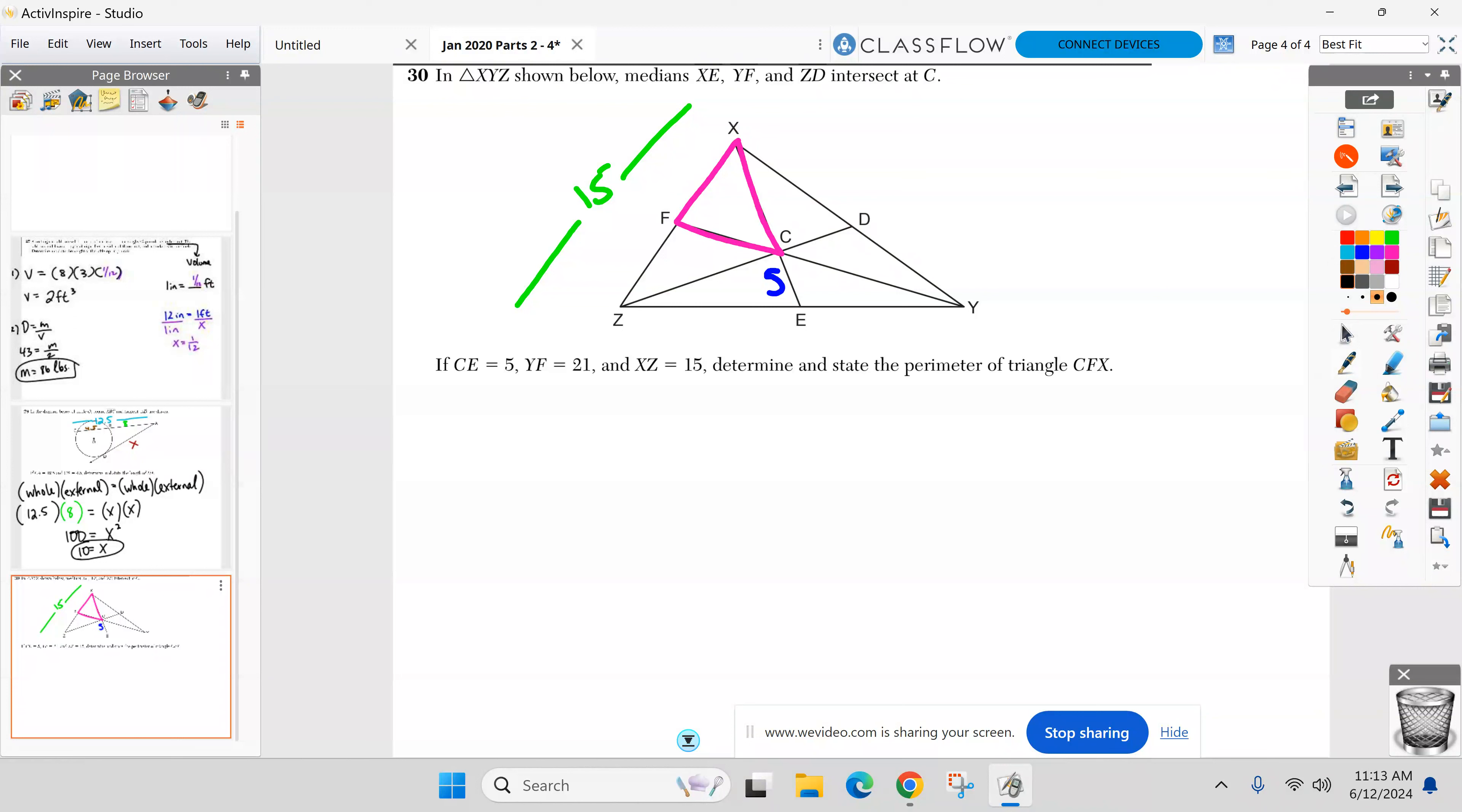You have three medians in this diagram. So let's review. A median starts at a vertex and goes where? Midpoint of the opposite side. Correct. So that tells me F, E, and D are all midpoints of those sides of the triangle. F is where I'm looking right now. If F is a midpoint of XZ, I can find, take half of it and now know that XF is 7.5 to start getting to the perimeter.